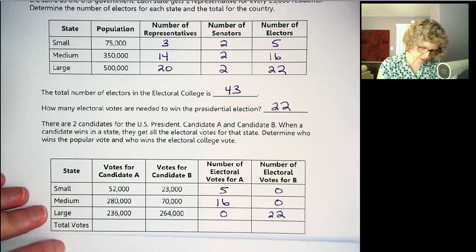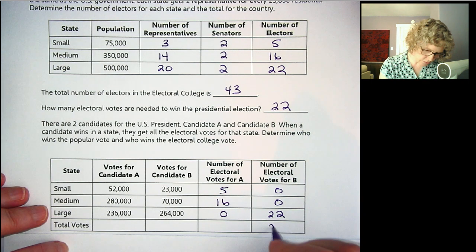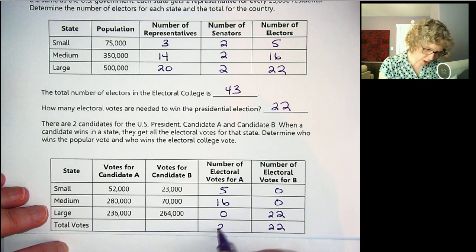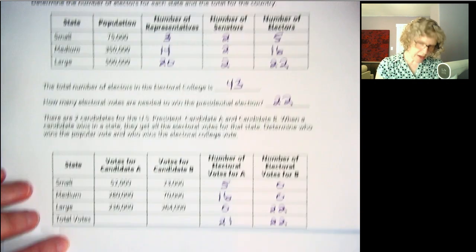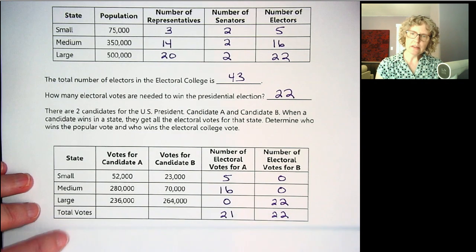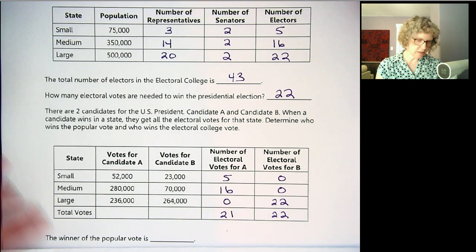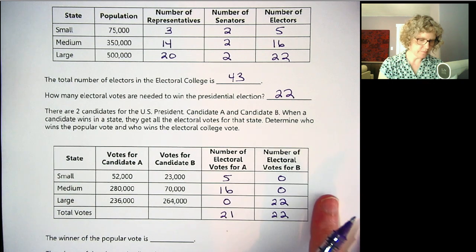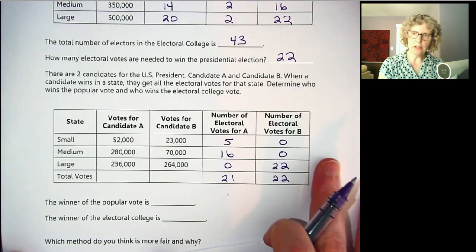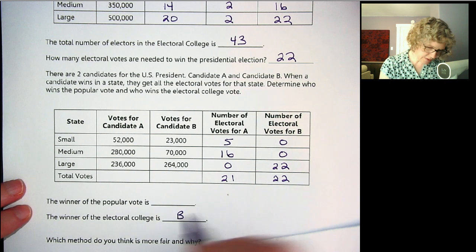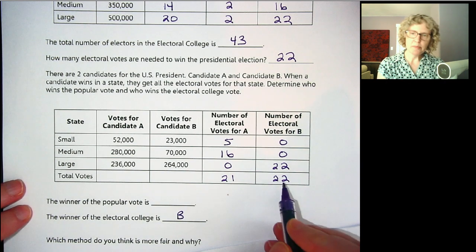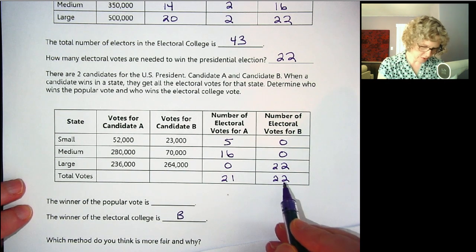Adding up the electoral votes: Candidate B has 22 and Candidate A has 21. So for the Electoral College, B wins — it's pretty close, B wins by just one vote.